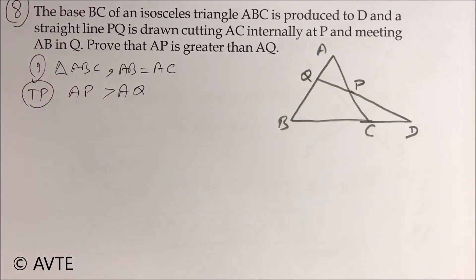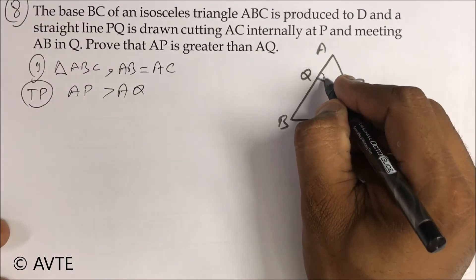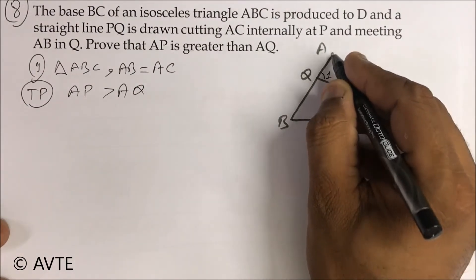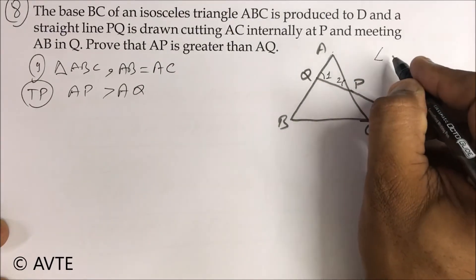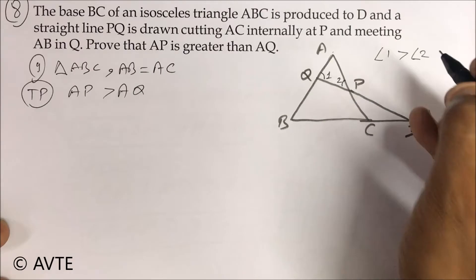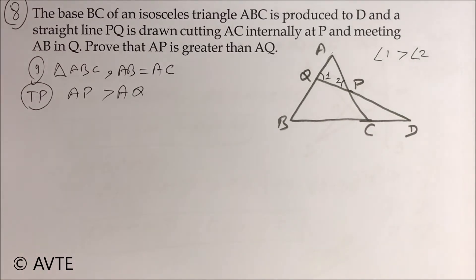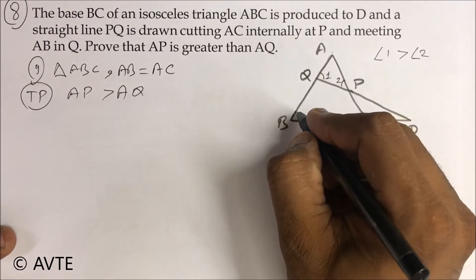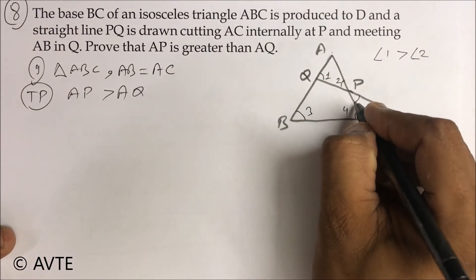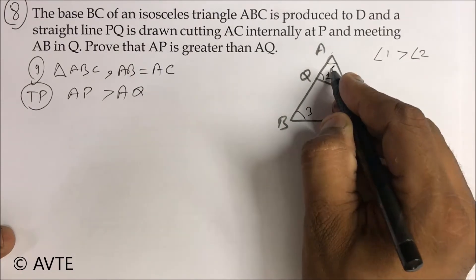In this question you have to write down a few theorems related to the inequalities chapter. We have to prove that AP is greater than AQ. In front of AP it is angle one, and in front of AQ it is angle two. Indirectly, you have to prove that angle one is greater than angle two, because if angle one is greater than angle two, then the greater angle has a longer side opposite to it. So your main aim is to prove angle one is greater than angle two. Since AB is equal to AC, we place angle three, angle four, angle five, and angle six.